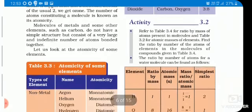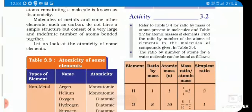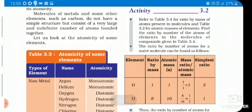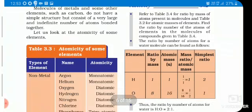Molecules of metals and some other elements such as carbon do not have a simple structure but consist of a very large and indefinite number of atoms bonded together. Some elements like carbon and other metals have many atoms that combine to form the complete structure of that particular metal's molecule.